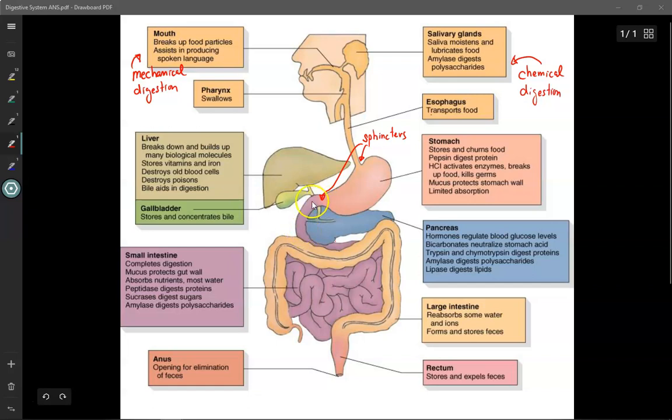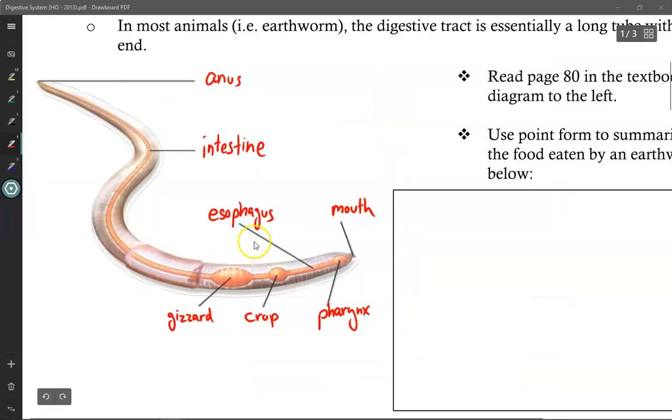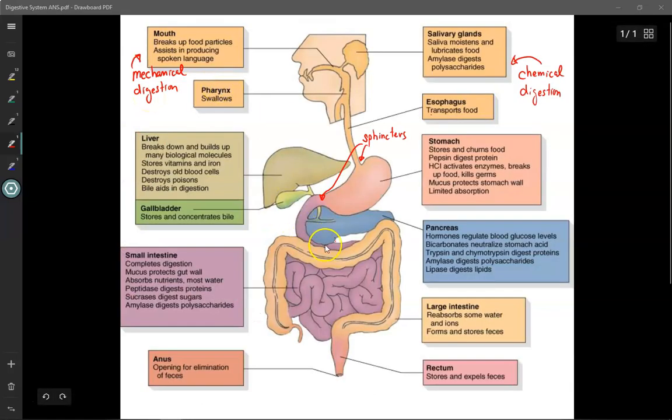Now, as the chyme leaves the stomach, it enters the small intestine. And the small intestine is the longest part of the digestive tract. It has to be super long in order to give the body time to absorb the nutrients from the food. If the intestine is too short, there would be a lot of wasted nutrients inside the feces as it exits the anus. And that just would not be very efficient. On average, the small intestine is about 7 meters long, or about 3.5 times the length of your body.